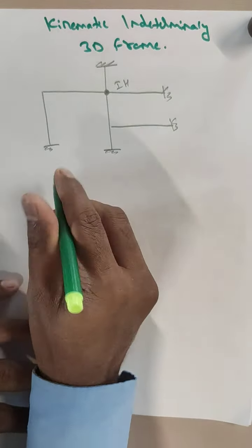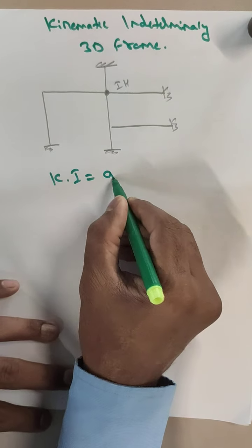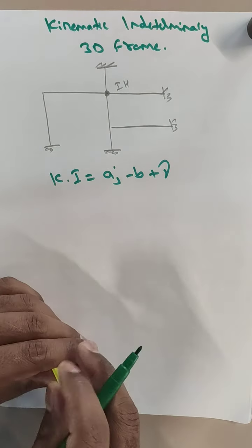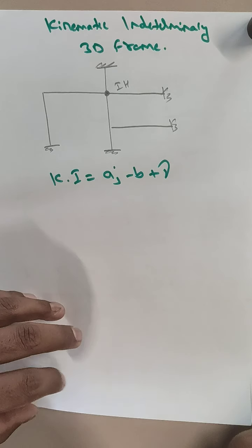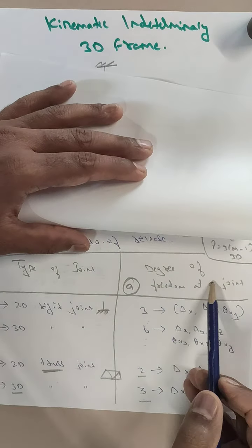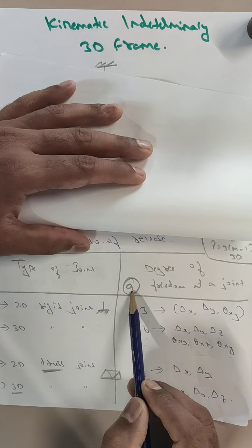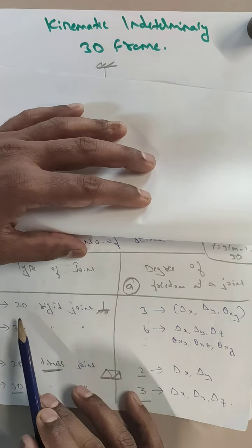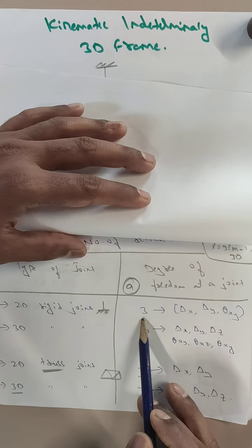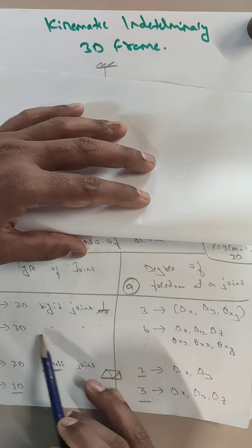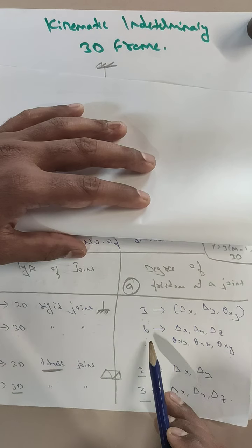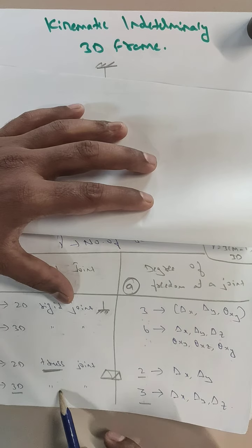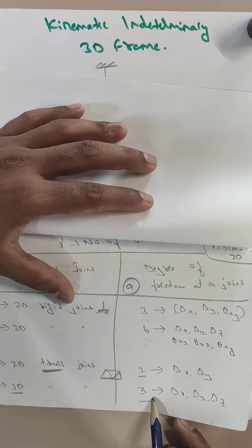The common equation for kinematic indeterminacy is: KI = a·j - b + γ. Here 'a' is the degrees of freedom available, which depends on the type of joint. For a 2D rigid joint, degrees of freedom are 3. For a 3D rigid joint, degrees of freedom are 6. For a 2D truss joint, degrees of freedom are 2. For a 3D truss joint, degrees of freedom are 3.